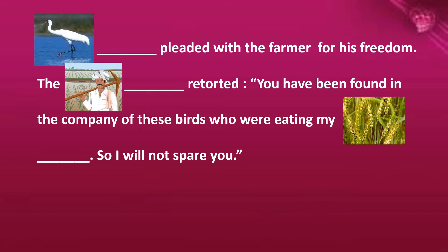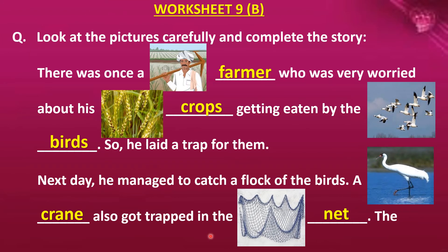Now let's read the story again with the answers. There was once a farmer who was very worried about his crops getting eaten by the birds. Worried means unhappy. His crops were getting eaten by the birds, that's why the farmer was very worried. So what did he do? He laid a trap for them — he wanted to catch the birds in the trap.